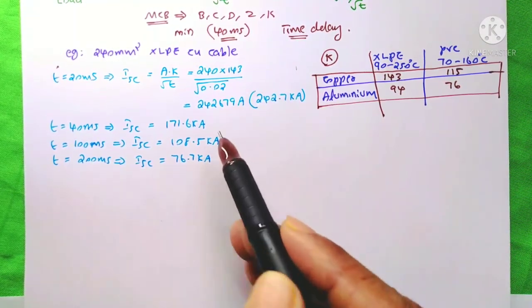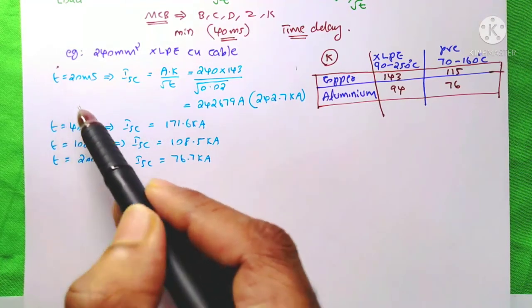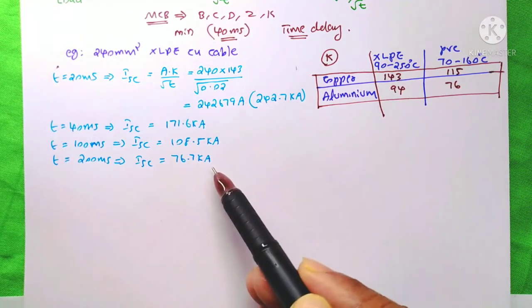From this, you can understand that when time increases, the short circuit current decreases.